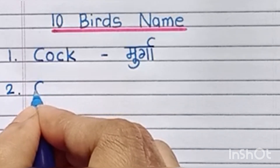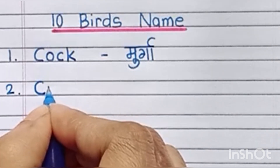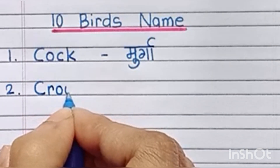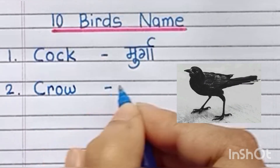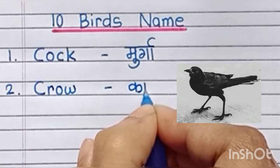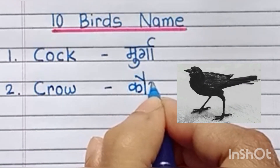Second, C-R-O-W, crow. Crow means kawwa.